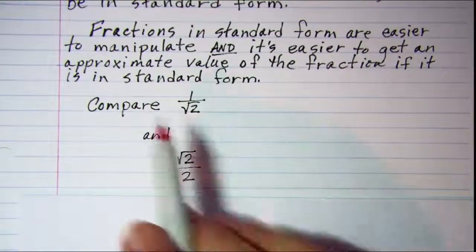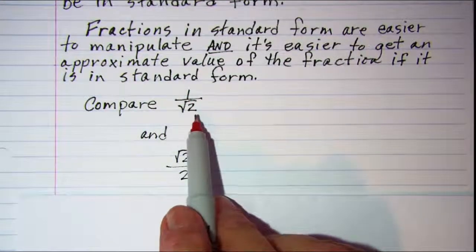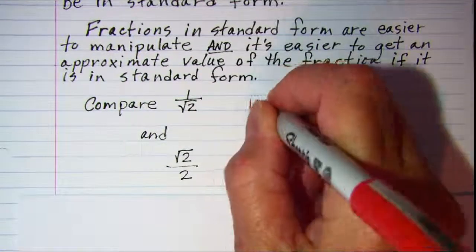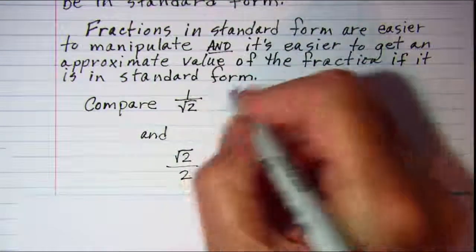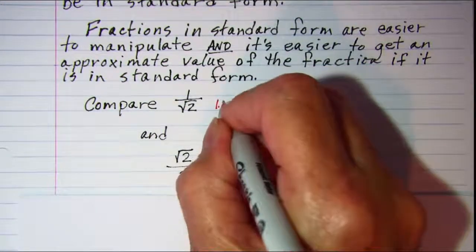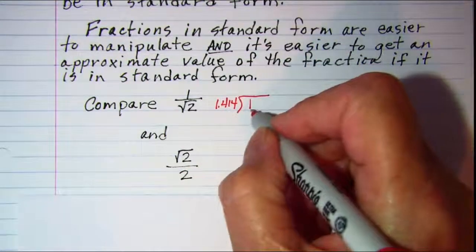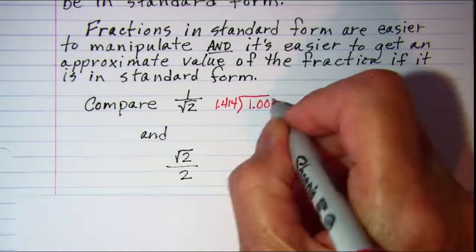For example, if we wanted the approximate value of this fraction, we would need to take 1 divided by the square root of 2, which is approximately 1.414. So we know from our arithmetic lessons that we need to annex three zeros.